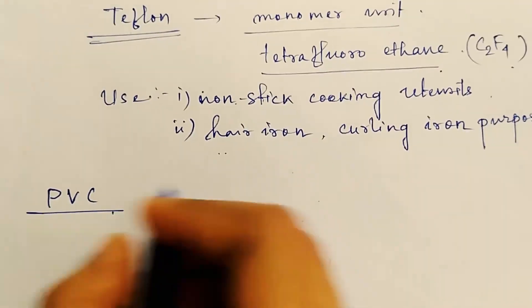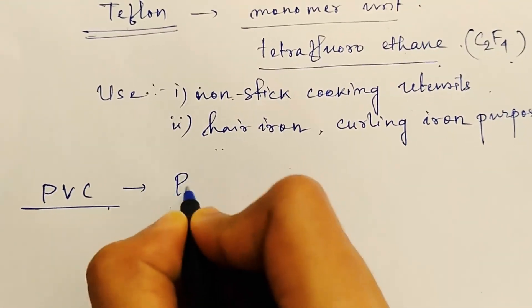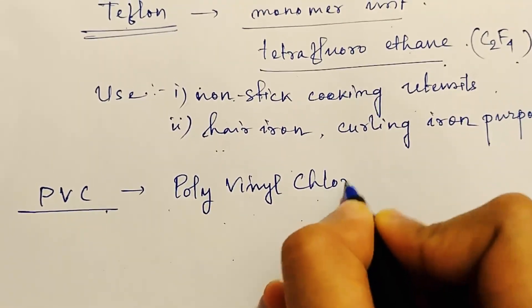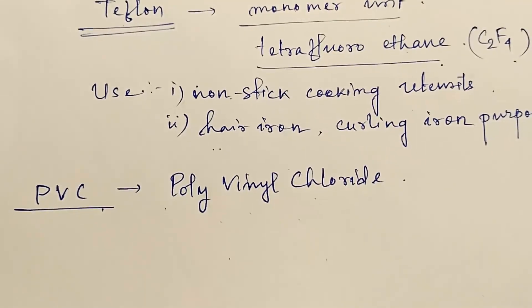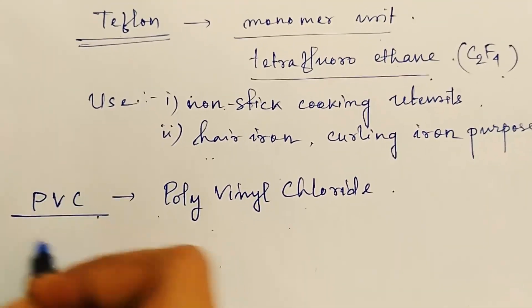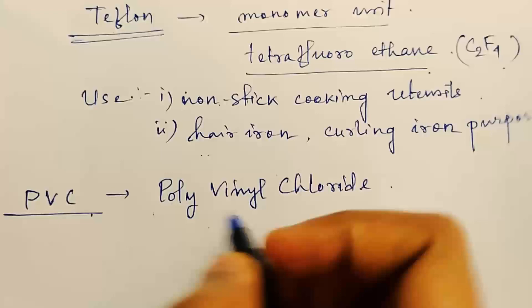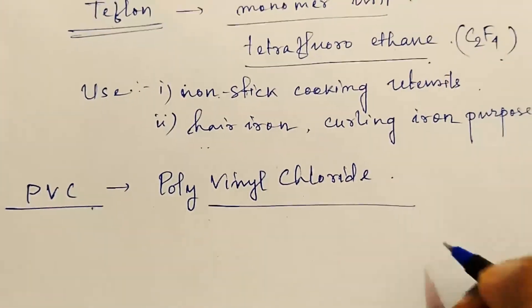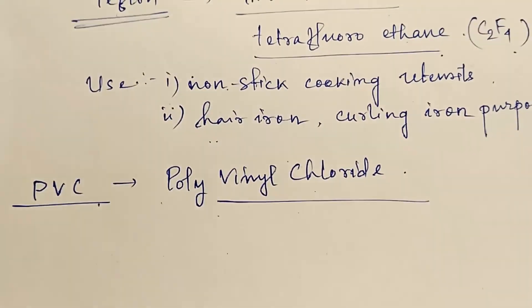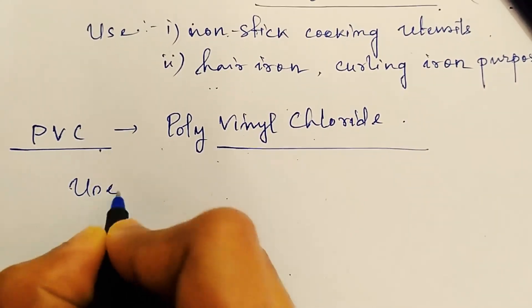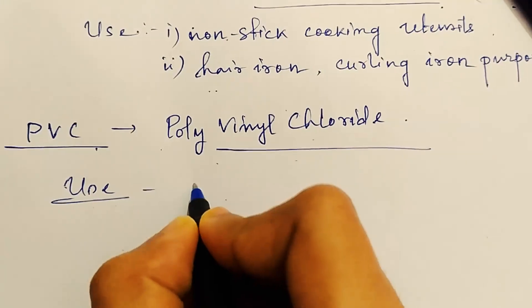Now next come PVC. This is a short form, the full name is polyvinyl chloride. Many times it comes in the question paper that is what is the full form of PVC, then the answer is this polyvinyl chloride, you have to remember this.